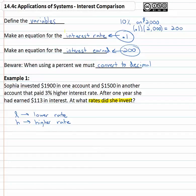We're told that the second account paid three percent higher interest rate. For the higher account, we're going to get three percent higher interest rate. So we take the lower rate and add to it the three percent — but be careful, we have to write that three percent as a decimal. Three percent as a decimal, we move the decimal point twice to get .03. So h equals l plus .03. We now have an equation for the interest rates.